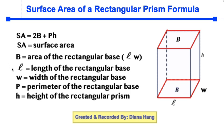L is the length of the rectangular base, and W is the width of the rectangular base. Capital P is the perimeter of the rectangular base. The perimeter is the sum of all four red outlined sides: one length plus another length plus one width plus another width — that is the perimeter.